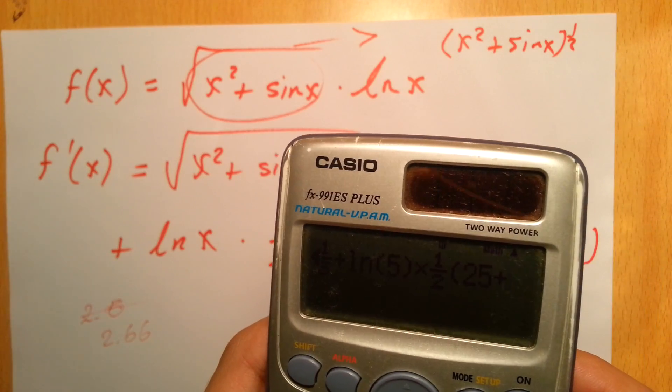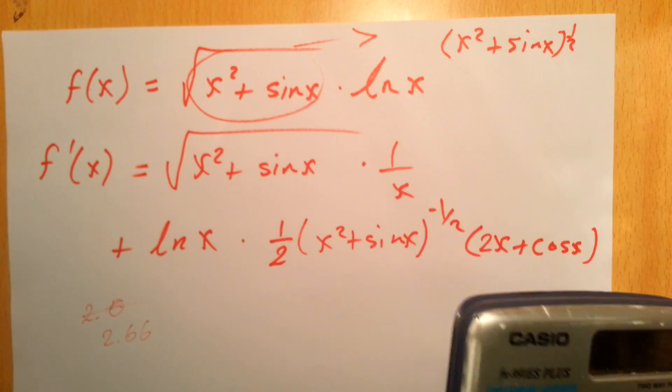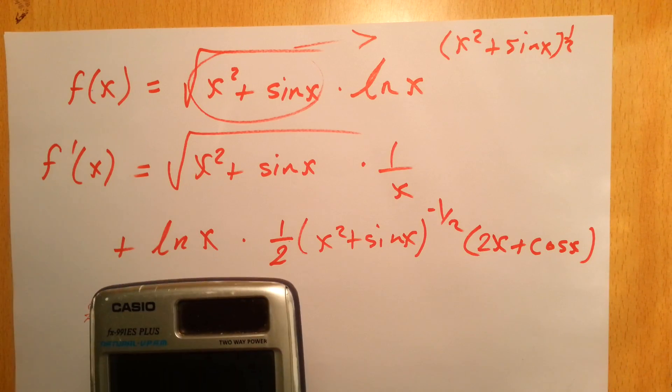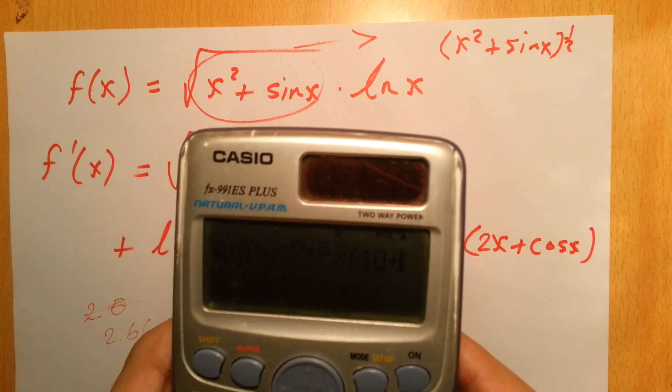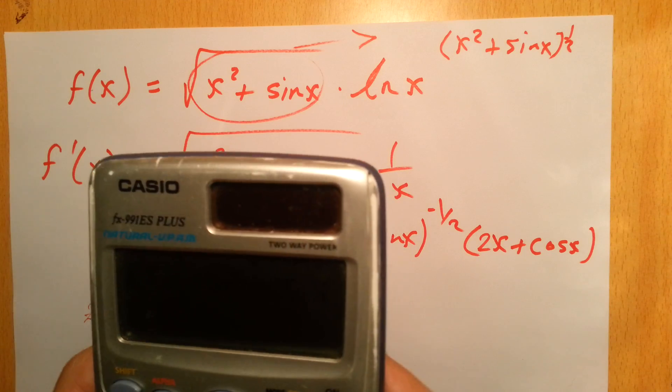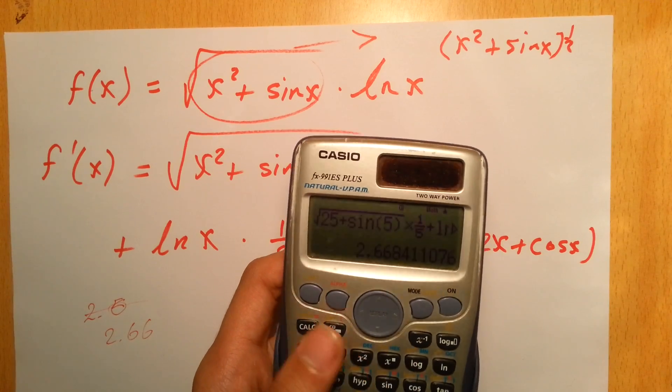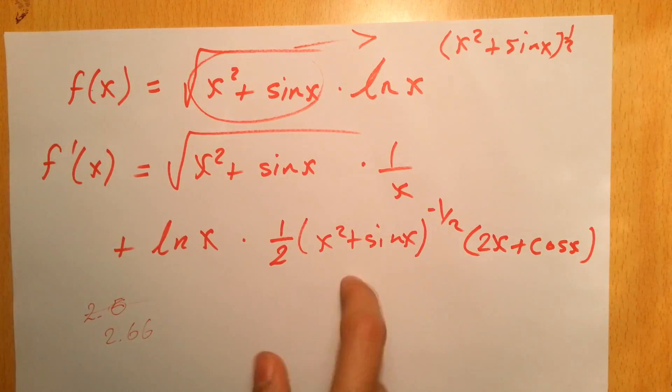Yeah, exactly, plus sine 5 to the minus half times 10 plus sine 5. Check the answer—it's 2.668, which is exactly the same solution.